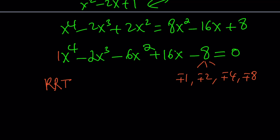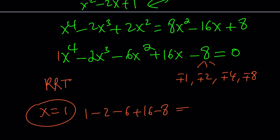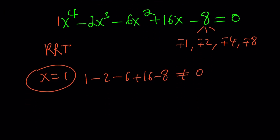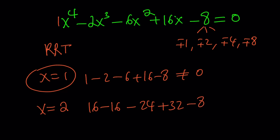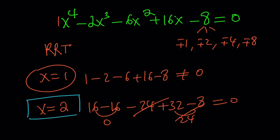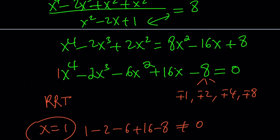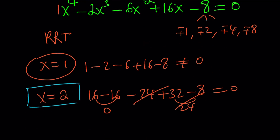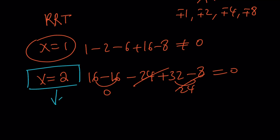For example, can x be 1? Testing: 1 minus 2 minus 6 plus 16 minus 8 — that's not 0, so x equals 1 is not a solution. x equals negative 1 won't work either. Is x equals 2 a solution? Testing: 16 minus 16 minus 24 plus 32 minus 8 — notice that this is 0. Which means x equals 2 is a solution to this quartic equation, though it's only one of the solutions. Factor theorem says if x equals 2 is a solution, then x minus 2 is a factor.